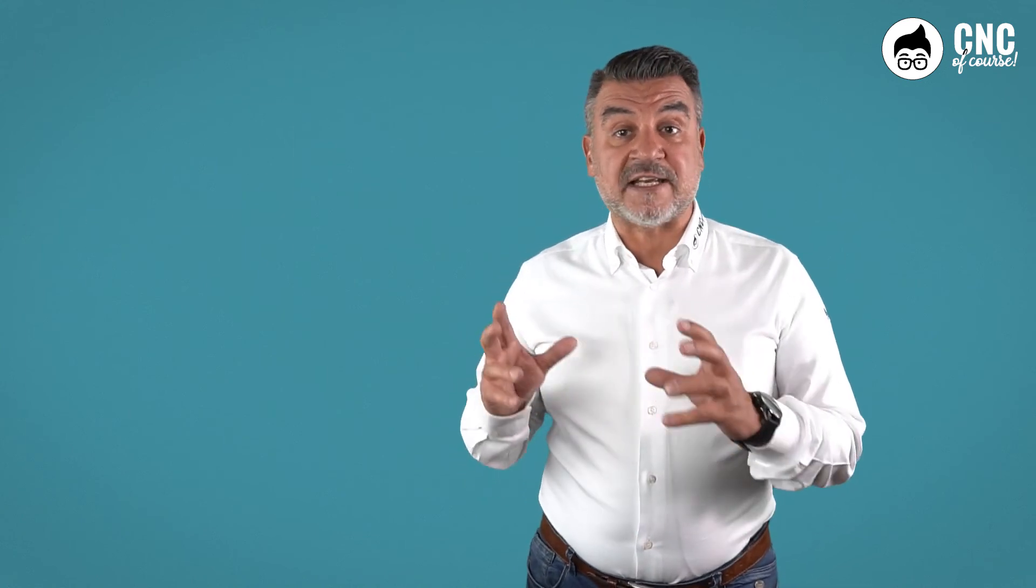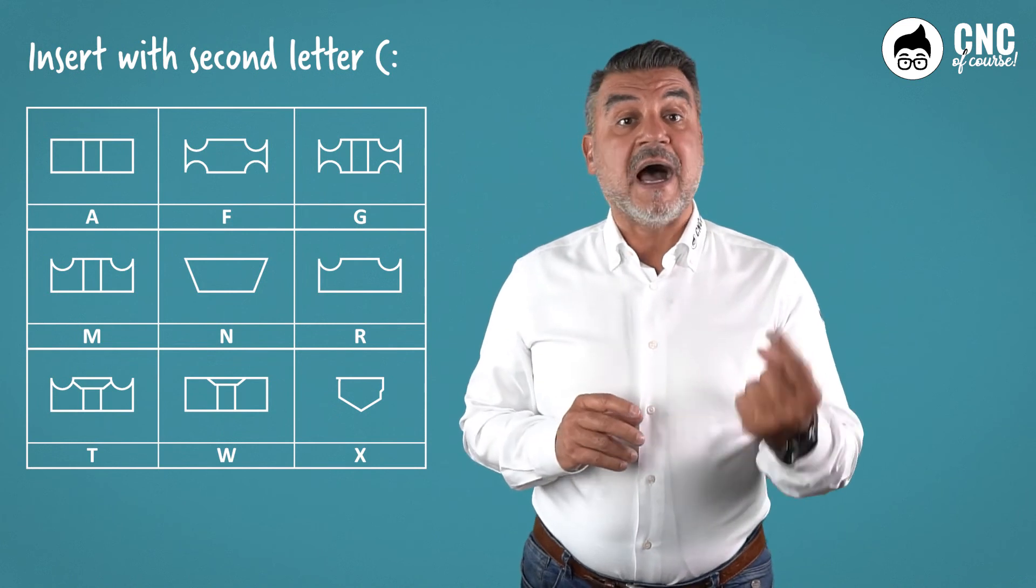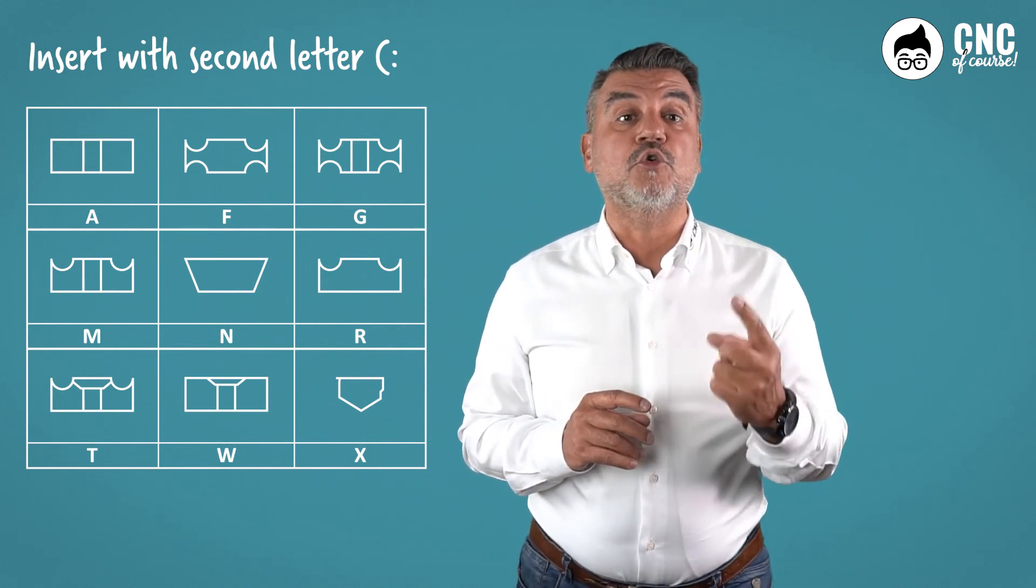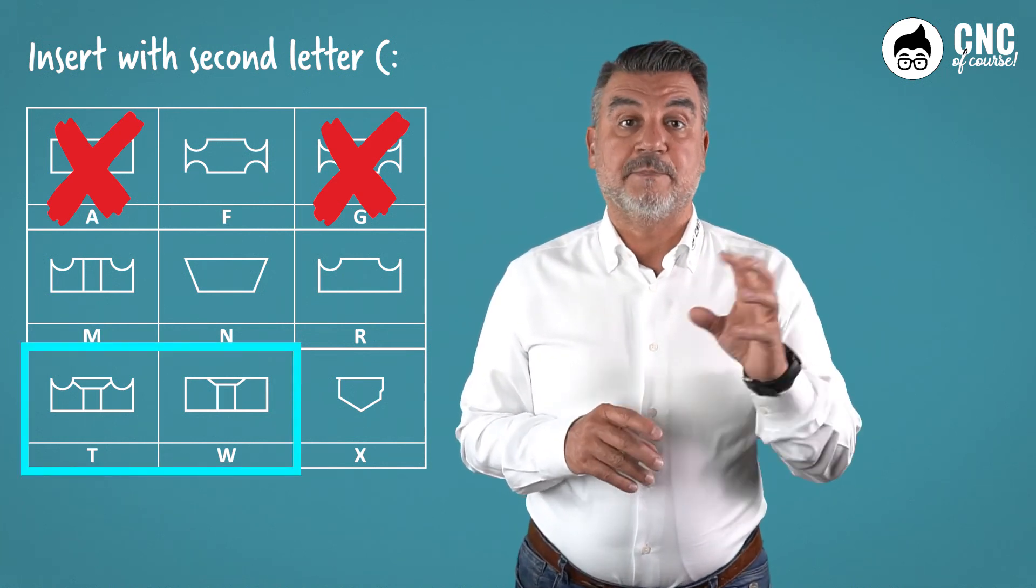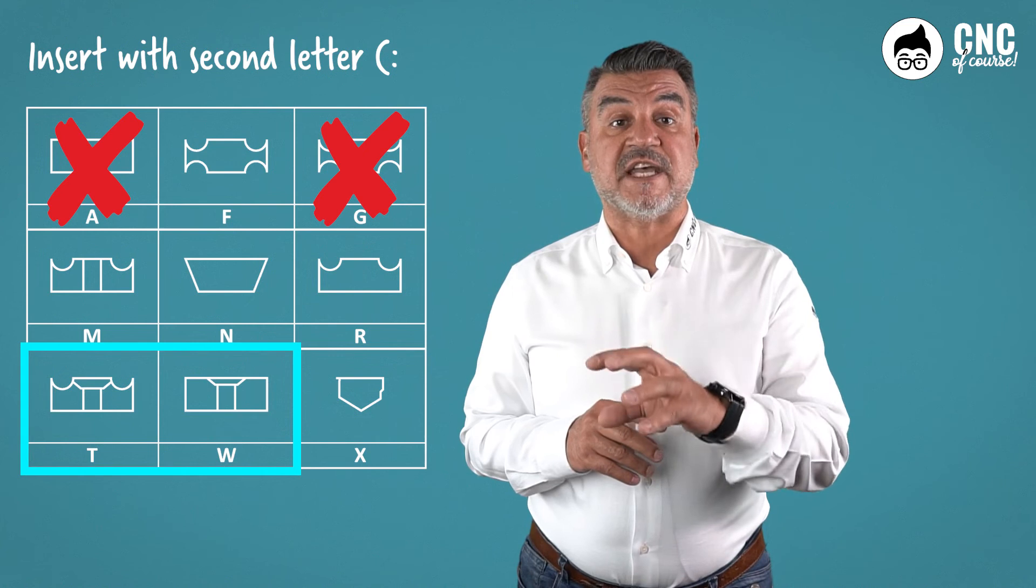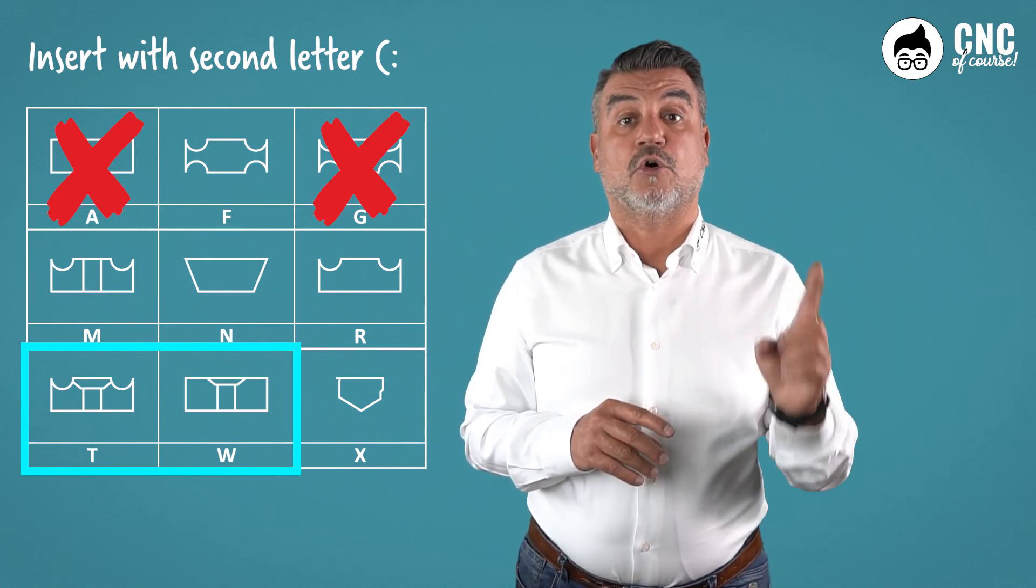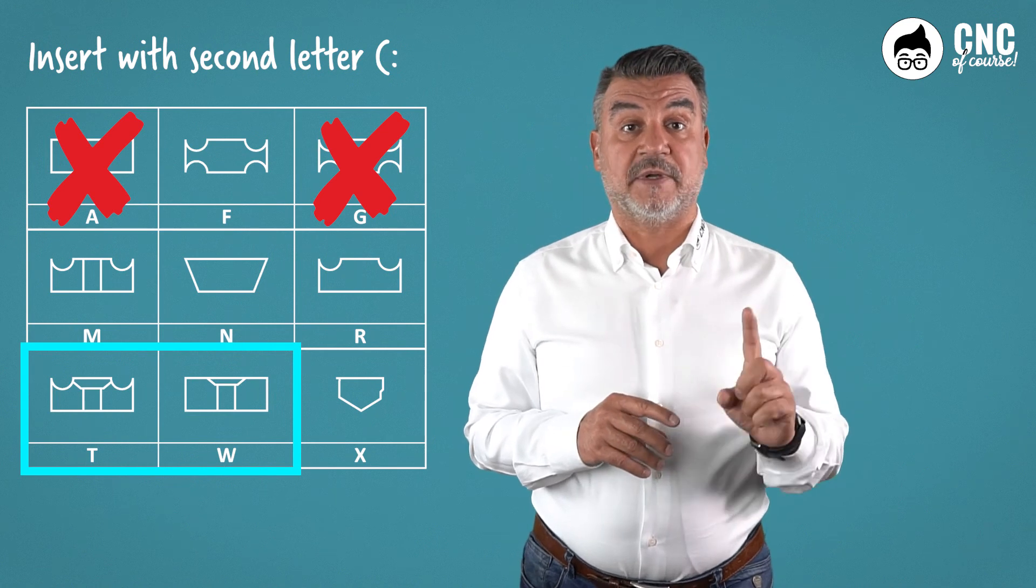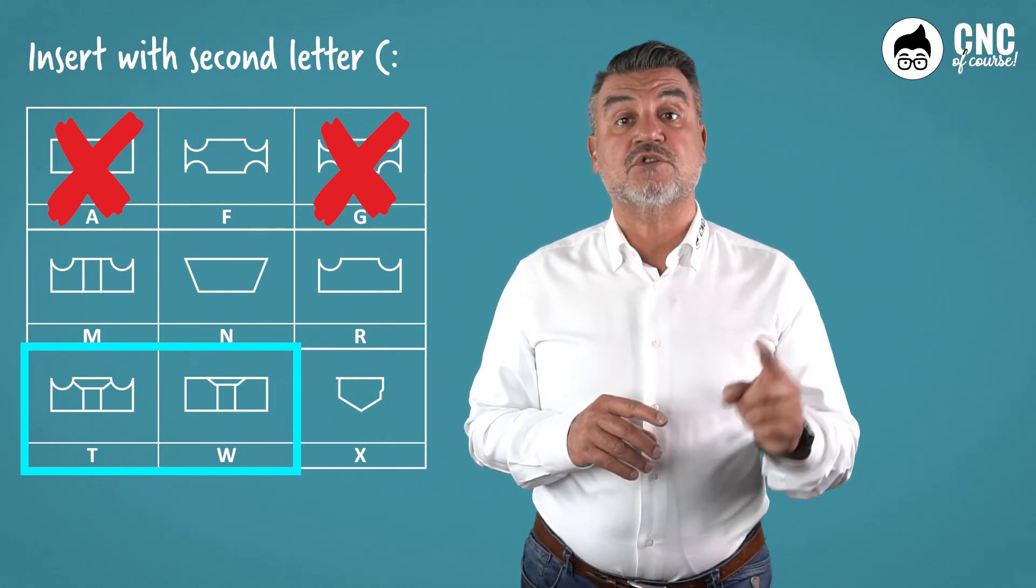In the case of inserts where the second letter is C, typical of screw clamping, at the last place of the group of letters, we would not have a G or A, but letters such as T or W. In the first case, it would mean a single-sided insert with a chip breaker. In the second case, a single-sided insert without geometry. Therefore, like the previous flat face insert, also screw-mounted.